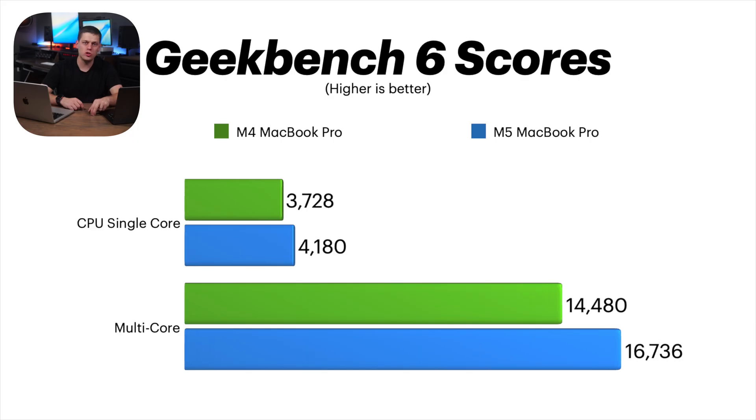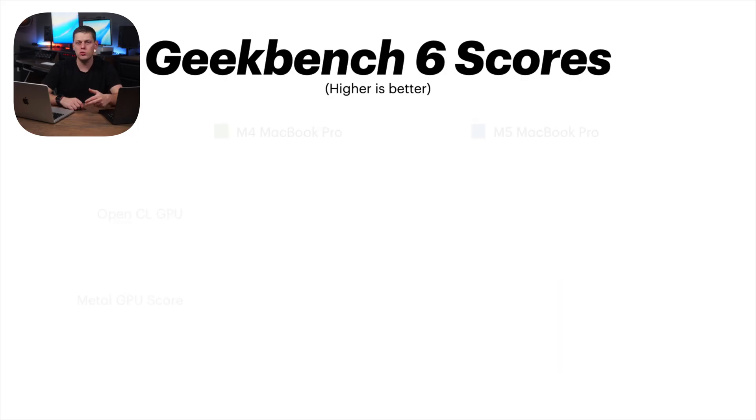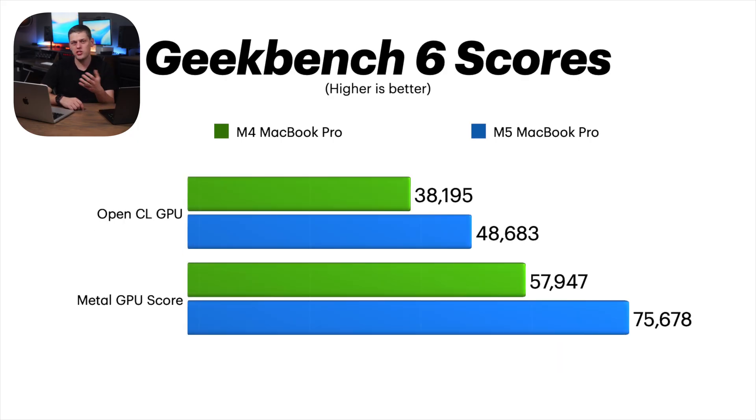As far as performance goes, when I got the M5 running I didn't necessarily feel like it was faster for day-to-day single-core style use. Whether you're browsing the web, writing emails, or doing day-to-day tasks, you're really not going to notice any difference. The two had very close single-core, multi-core, and GPU scores on Geekbench, but there was a nice incremental improvement on the M5 over the M4.